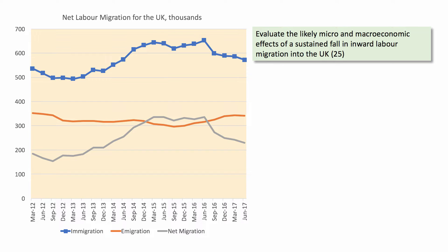The chart on the left shows three flows. The blue line shows the number of people coming into the UK per quarter of the year. You can see that was rising substantially through to about the middle of 2015–2016, and has now started to diminish — it's just under 600,000 people a year. The orange line shows people leaving the UK — emigration — at about 350,000 per year. The net figure is the blue line minus the orange line, which peaked at just over 300,000 on an annualised basis and is now down closer towards 200,000.